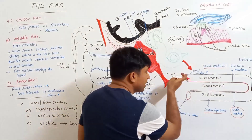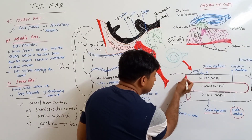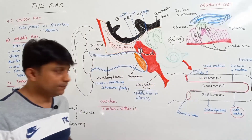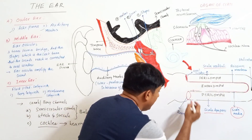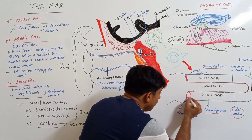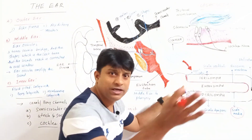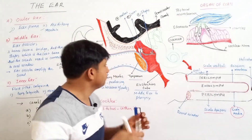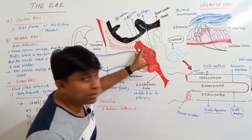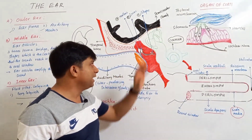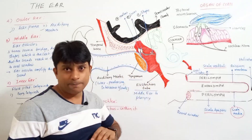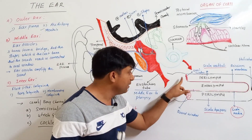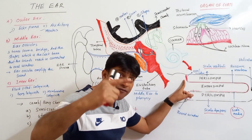Scala vestibuli ends with the oval window, and scala tympani ends with the round window. The three ossicles present in the middle ear — malleus, incus, and stapes — the stirrup (stapes) is connected to the cochlea by connecting to the oval window.